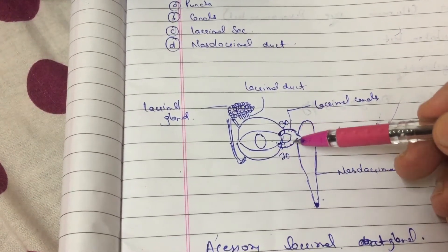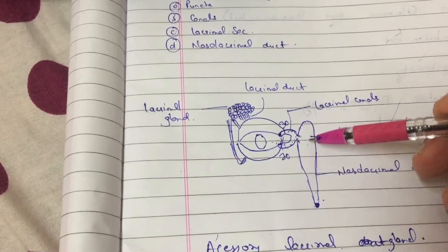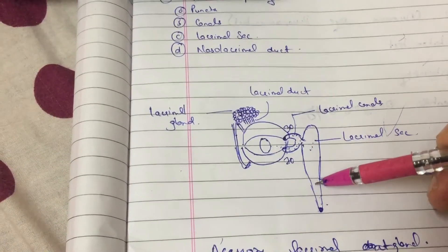Once the tear is taken up, it goes into the common canal. From the common canal it reaches the lacrimal sac. Again from the lacrimal sac, it goes into the nasolacrimal duct.